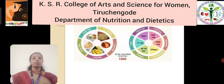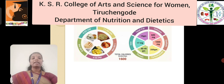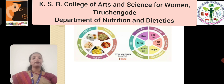A low energy, low carbohydrate, moderate protein, low fat, moderate sodium, and high fiber diet is recommended for patients suffering from diabetes mellitus. The calories required per day is 1600 kilocalories, carbohydrate about 250 grams per day, and protein about 40 to 45 grams per day.